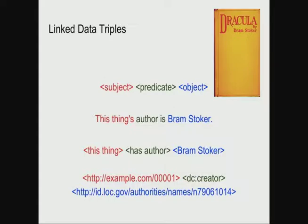The most common way to think about linked data is through triples: a subject, predicate, and object — you can think of it as a simple sentence. 'This thing's author is Bram Stoker.' You can break that sentence into subject, predicate, and object, and then represent it with potential URIs.